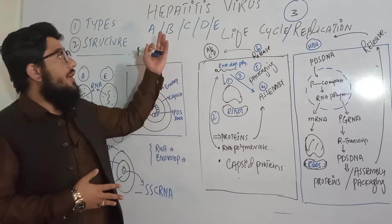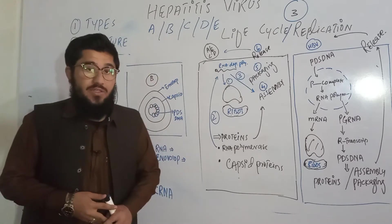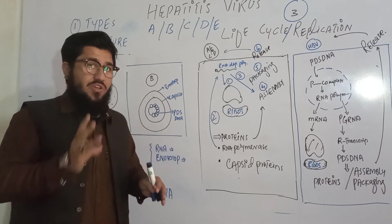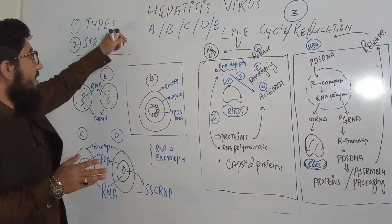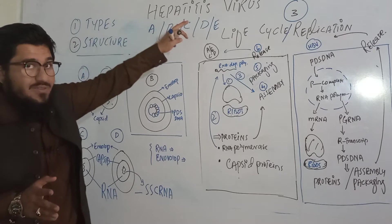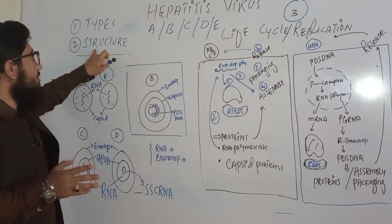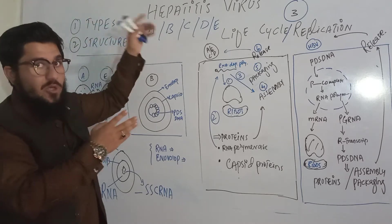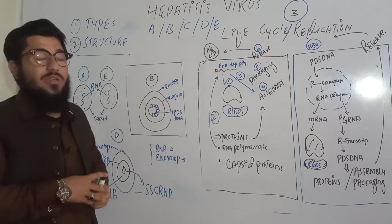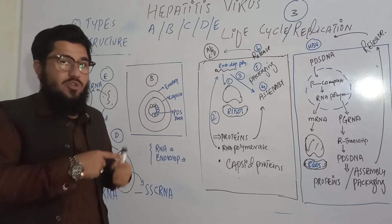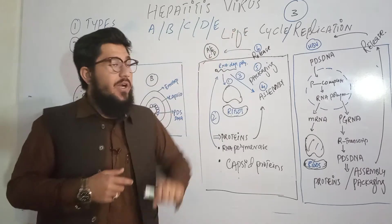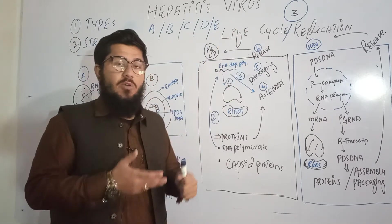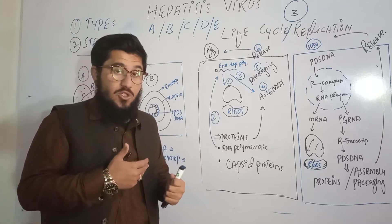The topic under discussion is the hepatitis virus. This topic will be covered in three points: point number one is the types of the hepatitis virus, point number two is the structure — we'll discuss the structures of all those types — and in the third point we'll discuss the life cycle or replication of all these types.